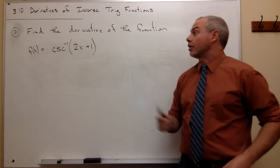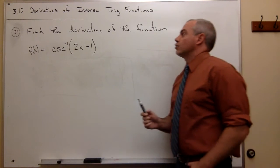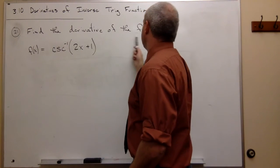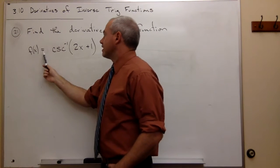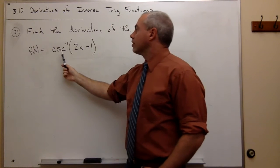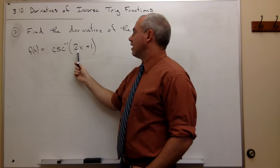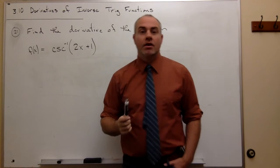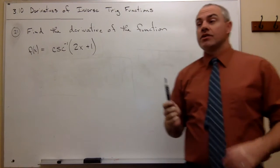Let's take a look at problem number 21. We'd like to find the derivative of the function f(x) = cosecant inverse of 2x plus 1.